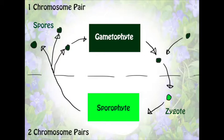Two gametophyte pieces fuse to create a zygote, which then lands where there are optimal conditions — for example, moist soil with a lot of nutrients. And then it will grow into a sporophyte, which has two chromosome pairs. This then, once in adult stage, will form spores that will go and land once again in favorable conditions, and form a gametophyte, thus continuing the cycle on and on.